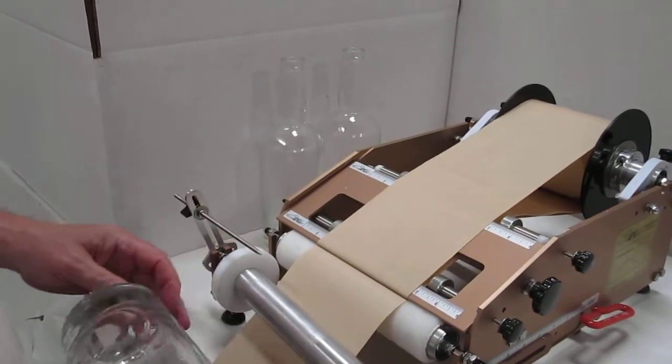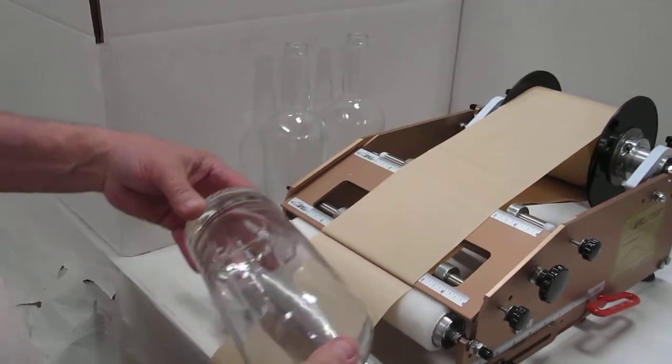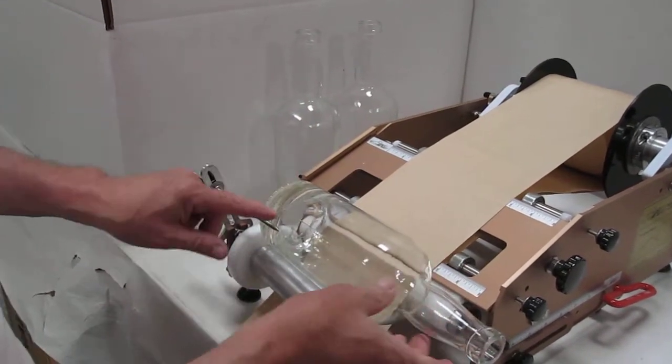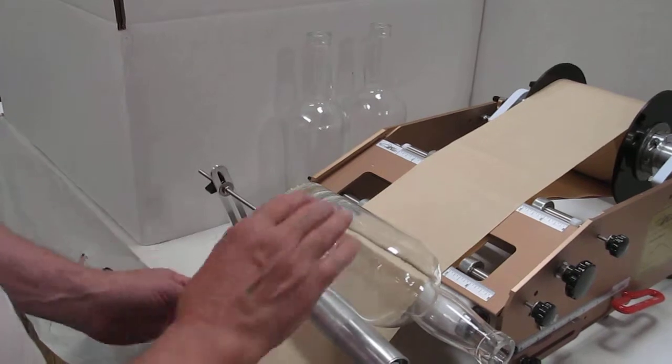The gap indicator, which allows you to set the gap between the front and back labels as you label on the machine, also helps you to stay off the seams on the bottle.